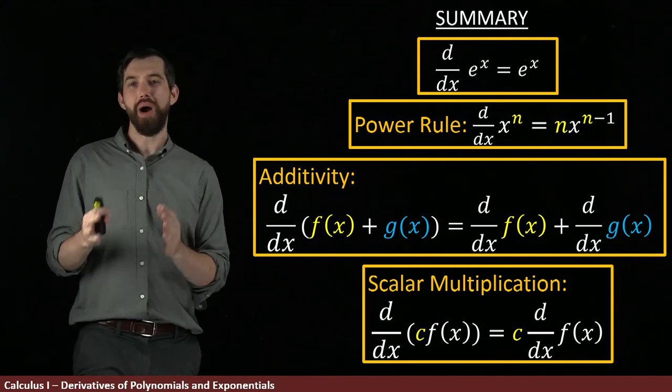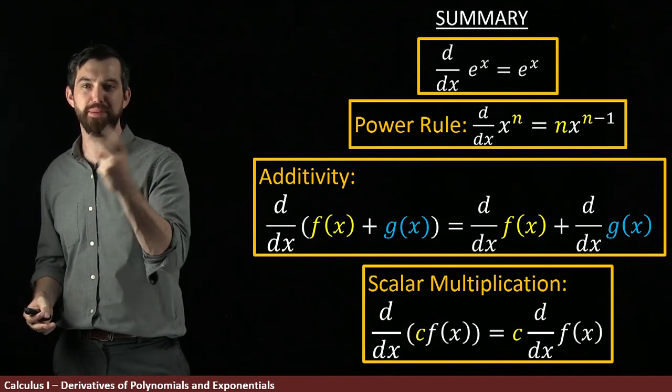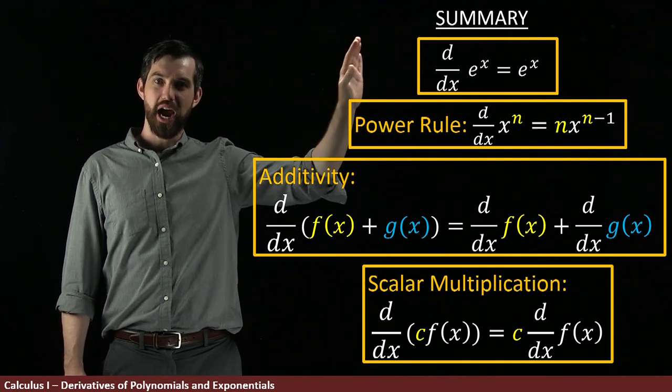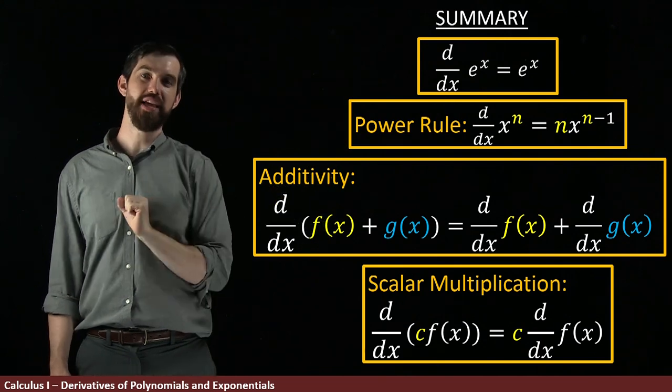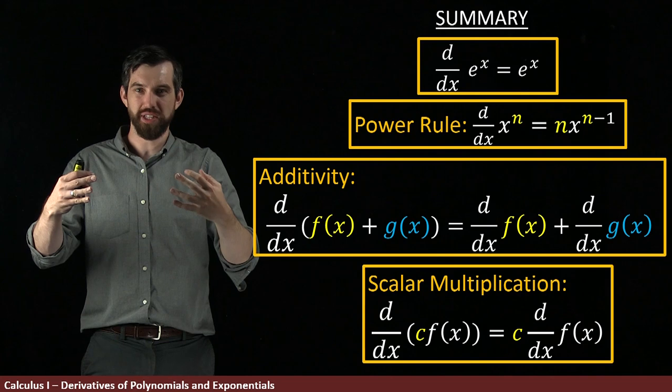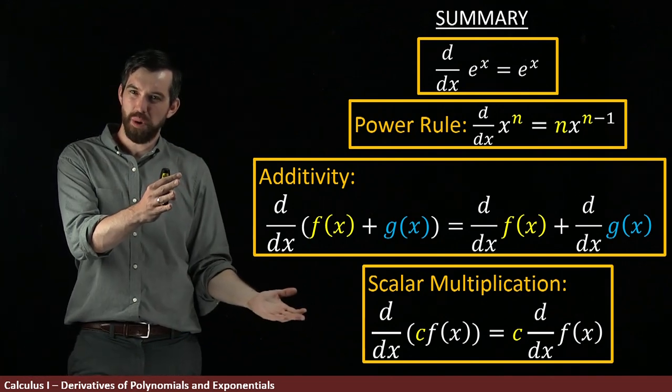Where are we at? We now know how to take the derivatives of two different types of functions: the derivative of an exponential like e^x, and the derivative of a power like x^n. We've got those two baseline kinds of functions, and then the additivity and scalar multiplication—those are ways that I can combine them.